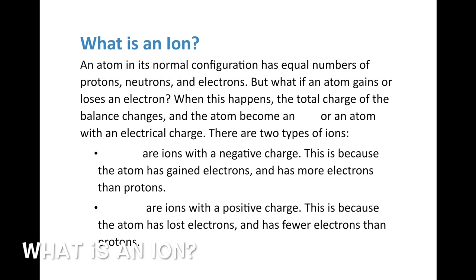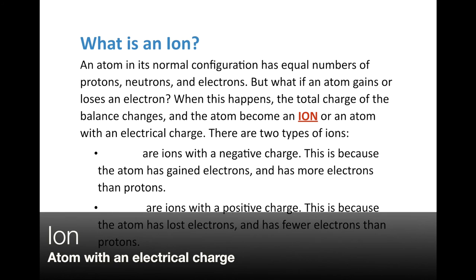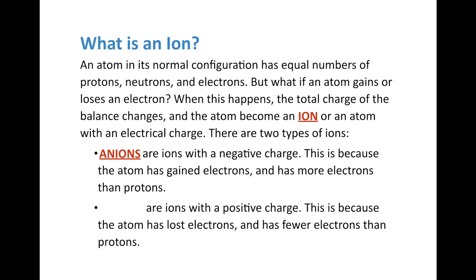Most atoms in normal configuration have equal numbers of protons, neutrons, and electrons. But if an atom gains or loses an electron, the total charge changes and the atom becomes an ion — an atom with an electrical charge. Ions with a negative charge are called anions: the atom has gained electrons and has more electrons than protons. The opposite are cations — ions with a positive charge — where the atom has lost electrons and has fewer electrons than protons. A helpful trick: the 'n' in anion is for negative, and the 't' in cation looks like a plus sign for positive.